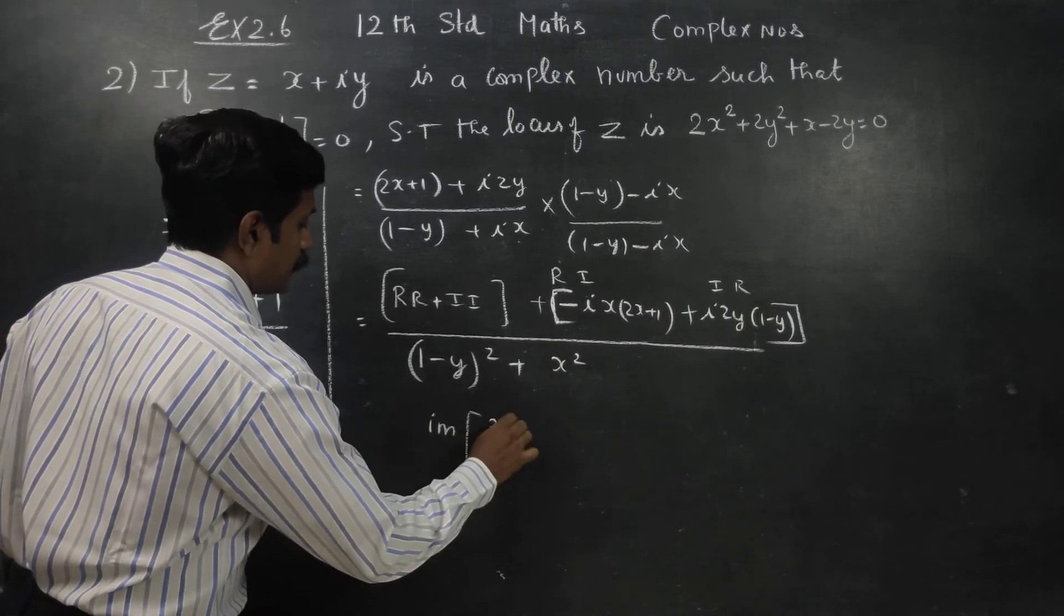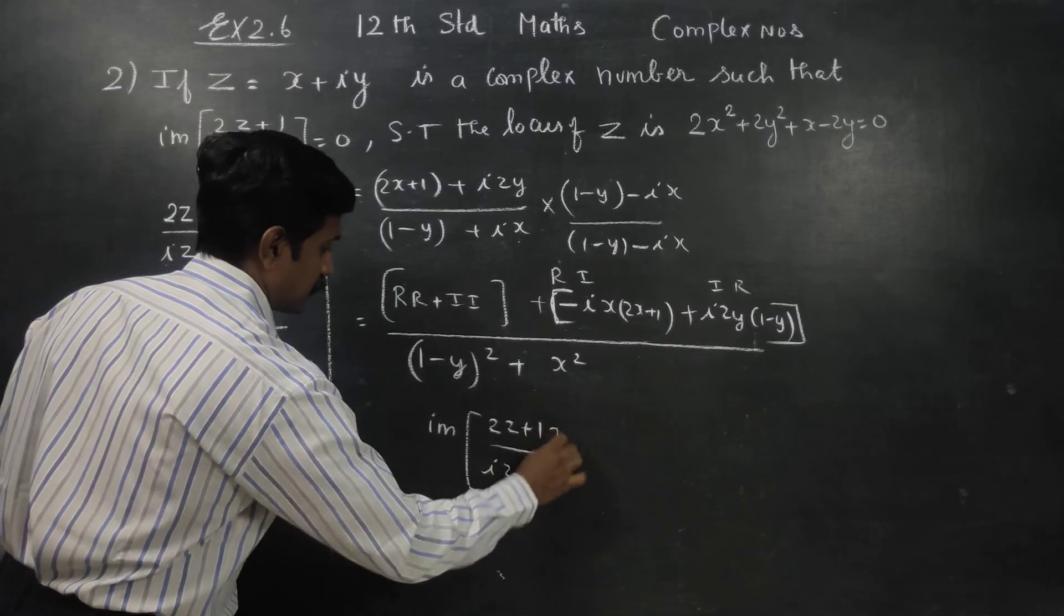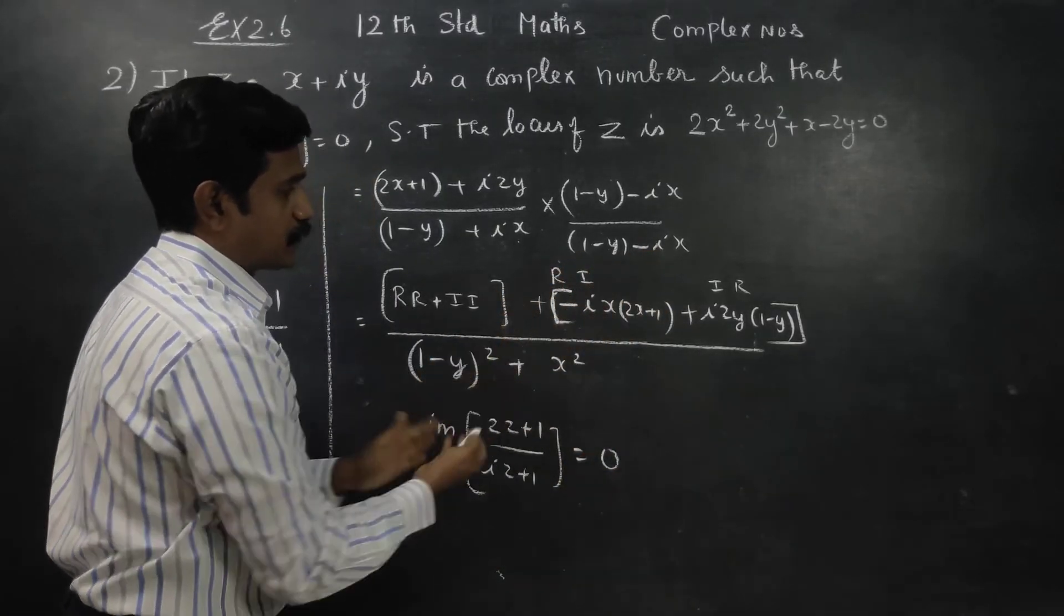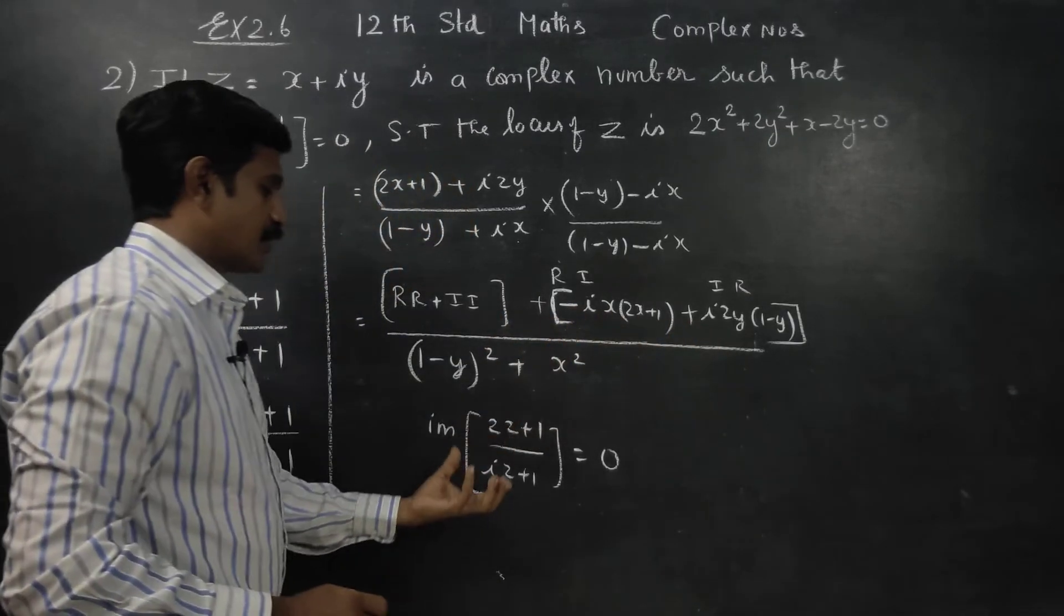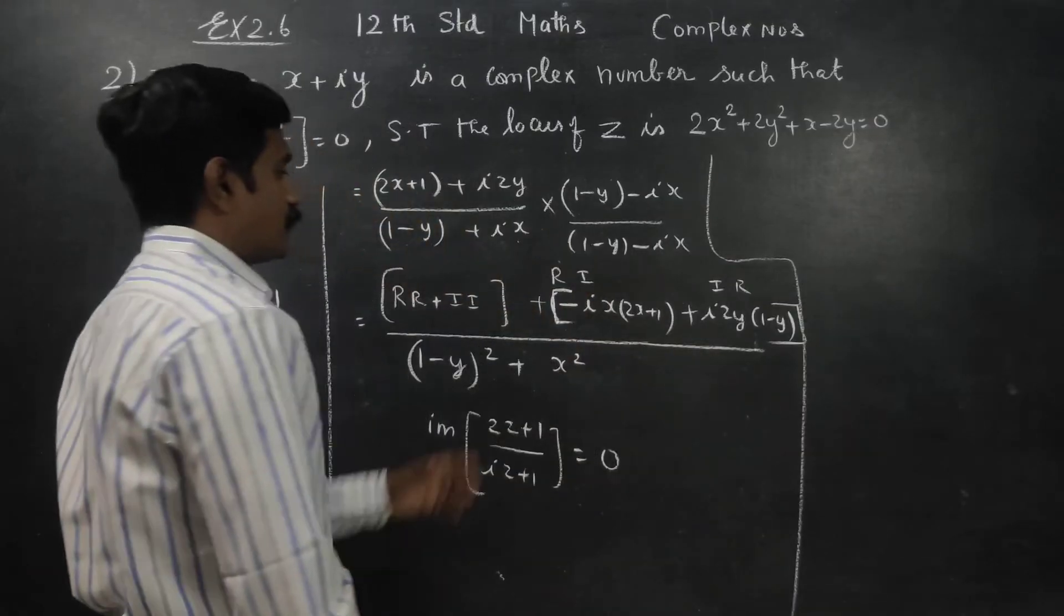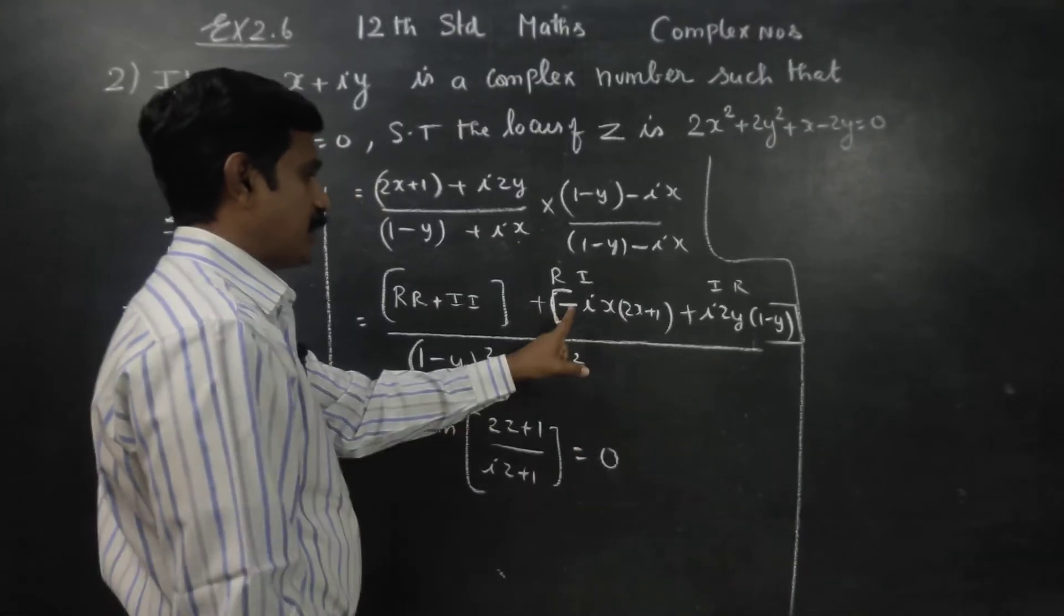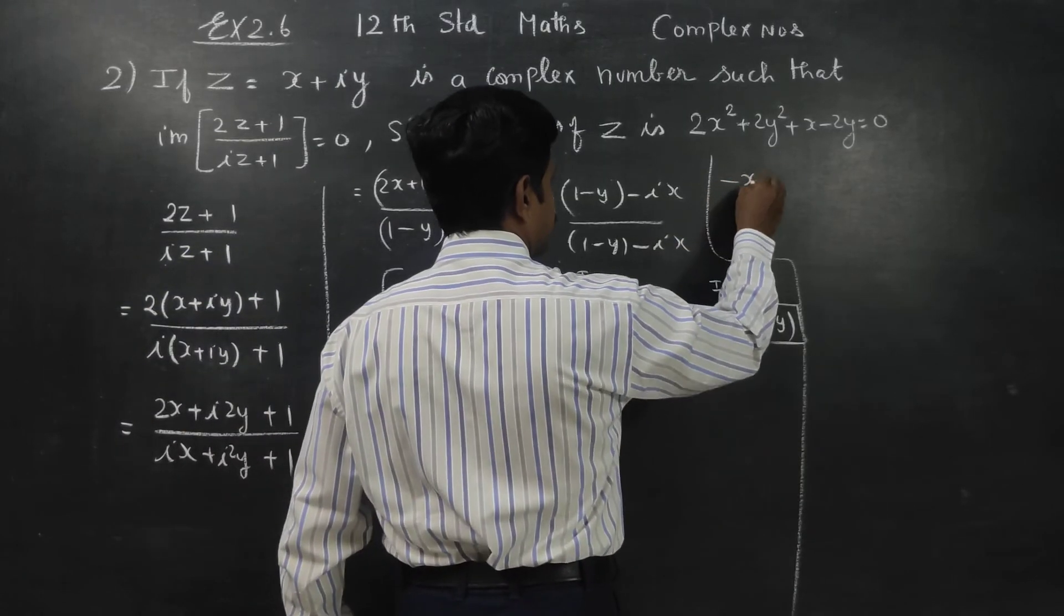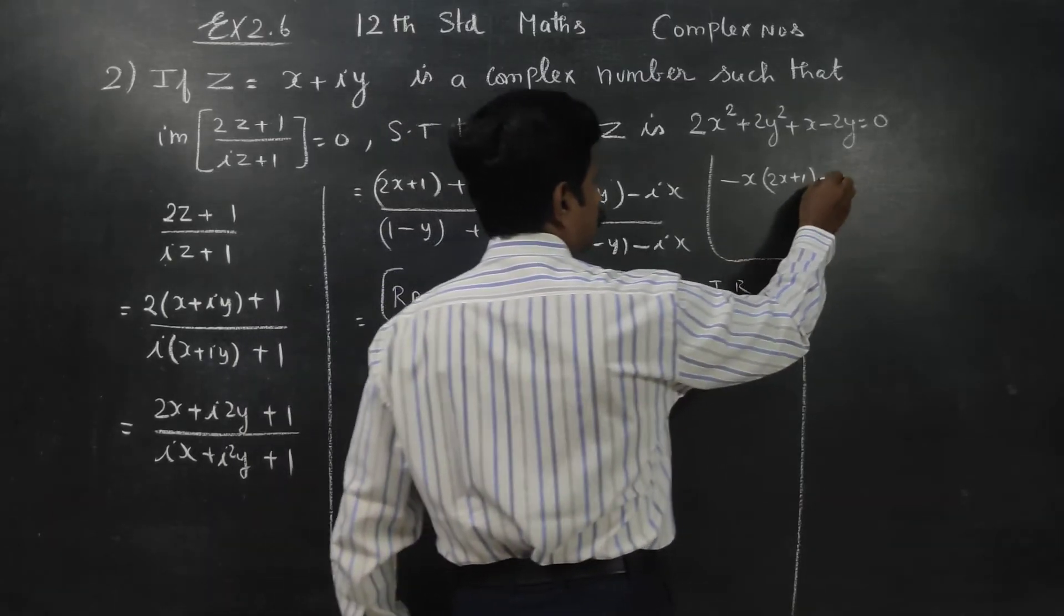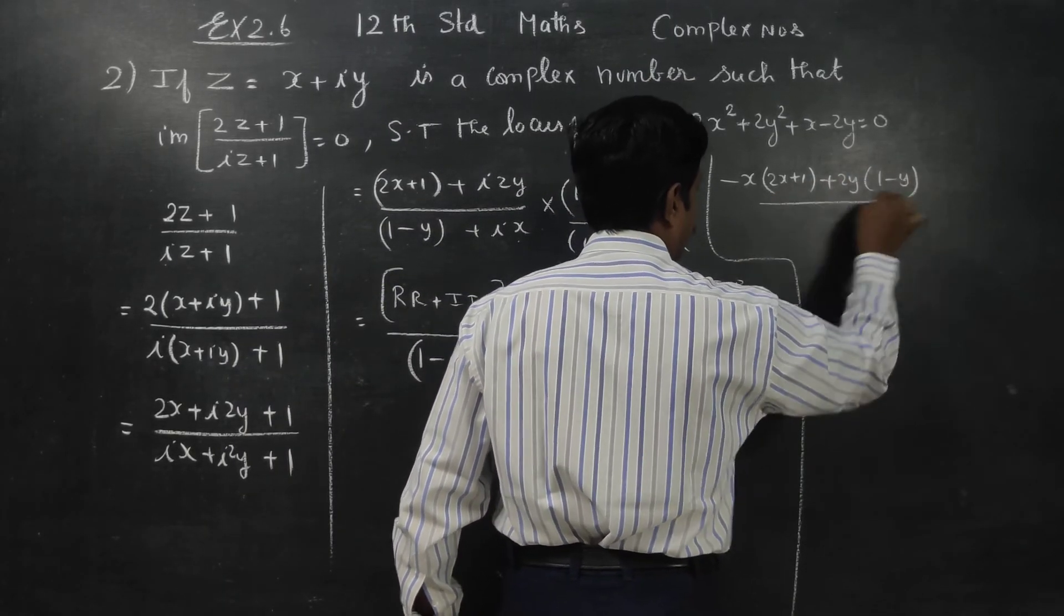Imaginary part of 2z plus 1 by iz plus 1 is equal to 0. Imaginary part of this, x plus 1 into 2y into 1 minus y by denominator is equal to 0.